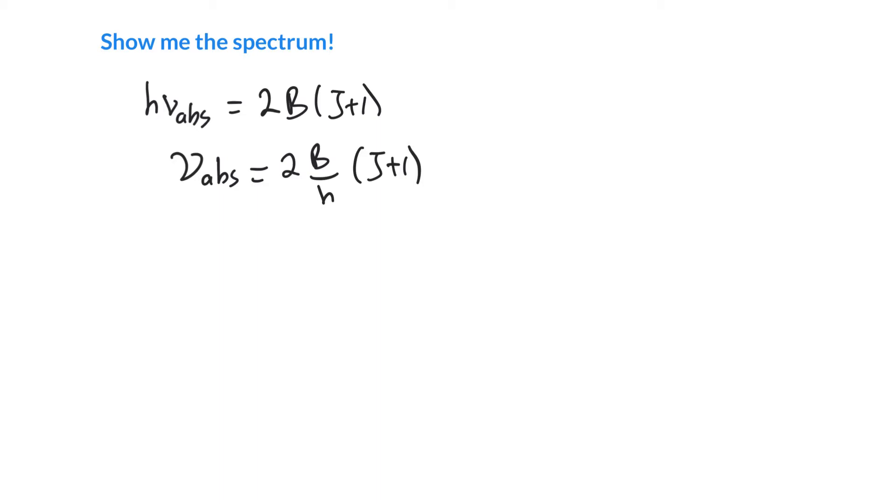Let's plot out this spectrum. We can draw a horizontal axis for our absorption frequency. We know J can take values from 0 to 1 to 2 to 3 all the way to infinity. The lowest absorption is at a frequency of zero. If J is 0, that gives us 2 times this all times (0+1), so a frequency of 2B/h. We have 2B/h as a nice line in the spectrum, corresponding to the 0 to 1 transition.